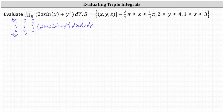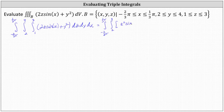We begin by integrating with respect to Z, treating Y and X as constants. The integral of two Z sine X with respect to Z is two times Z squared divided by two times sine X, which simplifies to Z squared sine X, and then plus the integral of Y squared with respect to Z is Y squared Z.